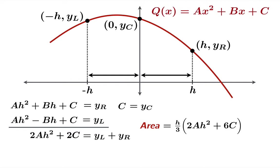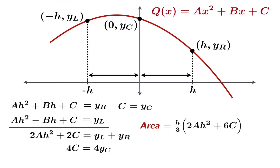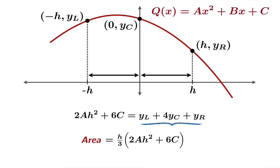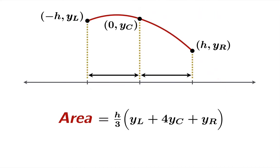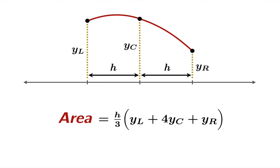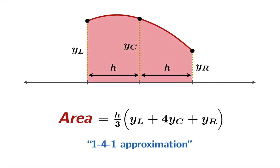That's almost what's in the parentheses on the right-hand side, but we're missing 4c. We can see how to get the missing 4c: take the equation c equals yc and multiply both sides by 4, then add it to the previous result. When we add those together, we get 2ah squared plus 6c equals yl plus 4yc plus yr. Substituting that into our formula, the area is h over 3 times yl plus 4yc plus yr — where h is the half width. This is what we're calling the 1-4-1 approximation for area.